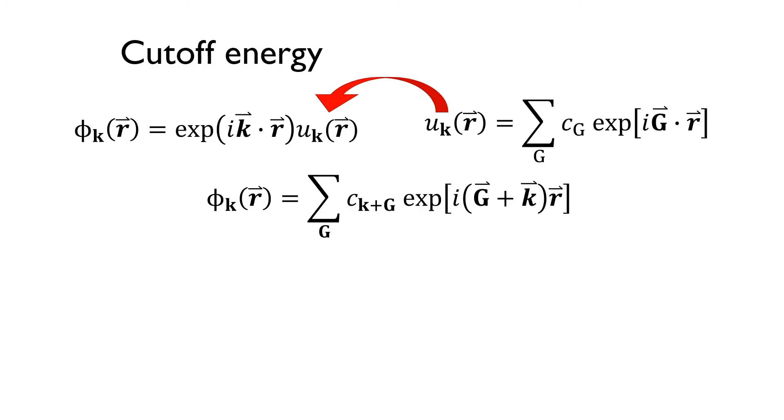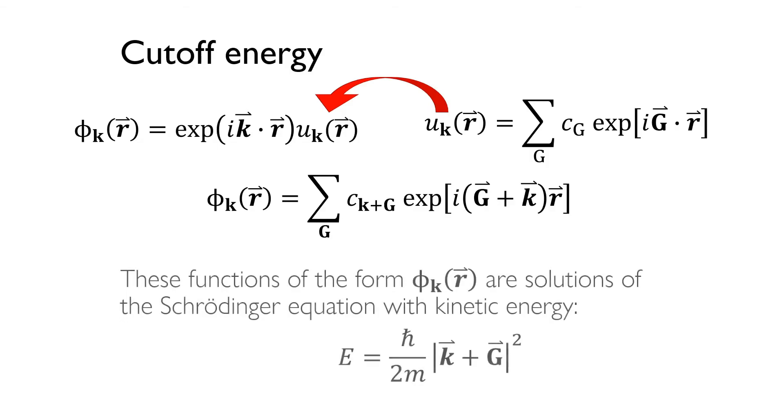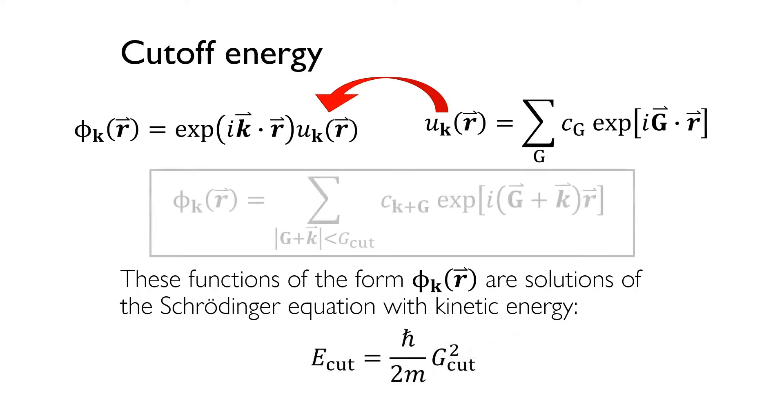Something you should notice is that this formula means that evaluating these solutions even at a single point in k-space requires summation over an infinite number of possible values of g. It's clear that something has to be done in order to make these types of calculations feasible. Fortunately, the functions phi k have simple interpretations as solutions to the Schrodinger equation with the kinetic energy E equal to h-bar squared over 2m times the magnitude squared of the vector k plus the vector g. We can reasonably assume that solutions with lower energies are more physically important than solutions with higher energies, so we can truncate the infinite sum in phi k to only include solutions that have kinetic energies less than some value. This reduces phi k to a sum over values of the vectors k plus g less than some cutoff energy E cut. And you might notice, depending on the value of k, the summation will include slightly different numbers of terms.